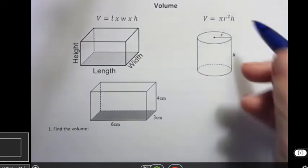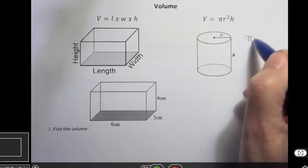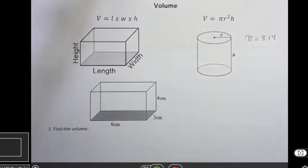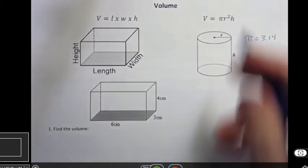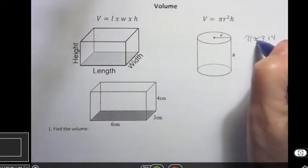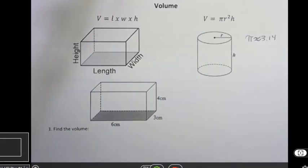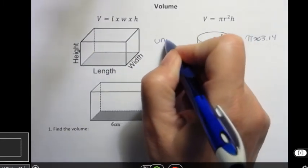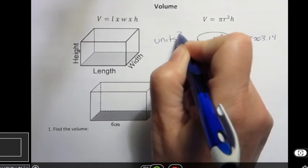And for our pi let's use 3.14 and that's an approximation, so we'll approximate it that way. And then whenever you talk about volume you have three dimensions, so whatever your units are they're going to be to the third power.